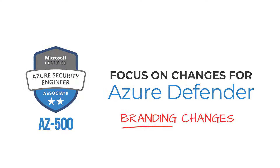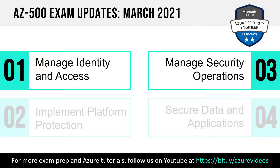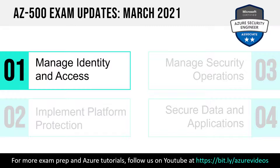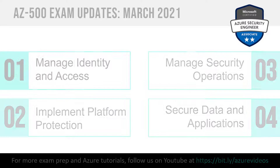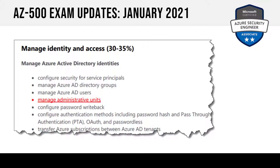Let's get into the changes in March 2021, which came in Objective Domain 1, which is Manage Identity and Access. In Domain 1, we saw a single change: the addition of Manage Administrative Units. If you're not familiar with Administrative Units, I'll give you a pointer here in just a moment.